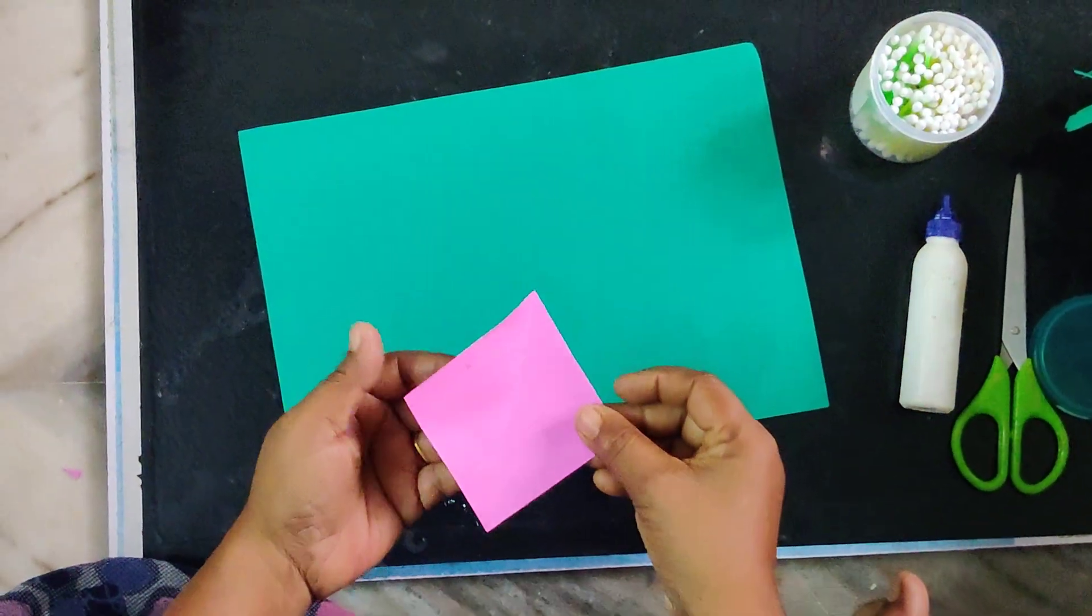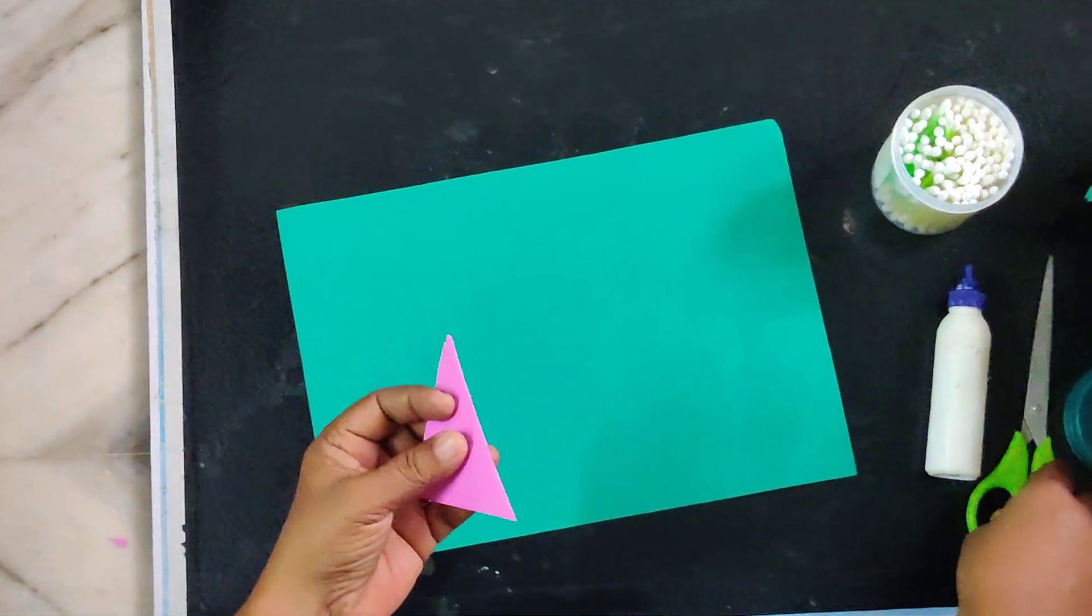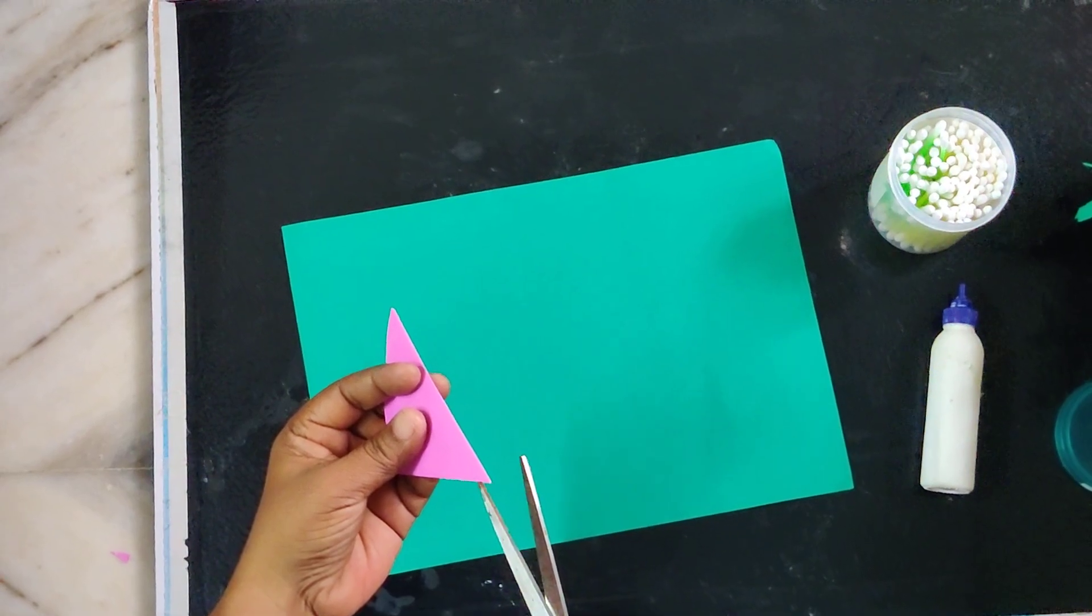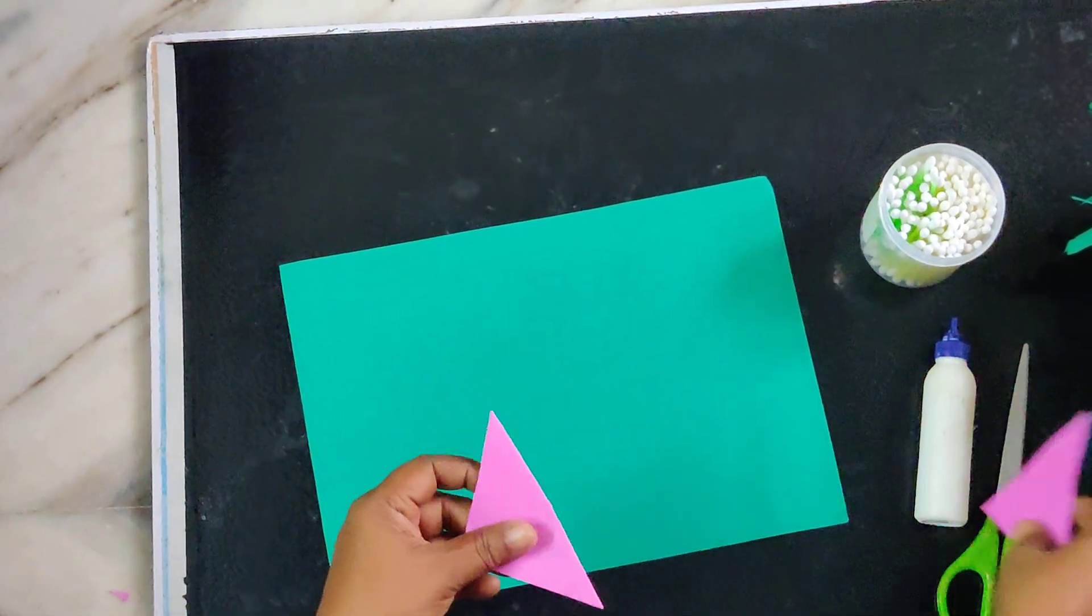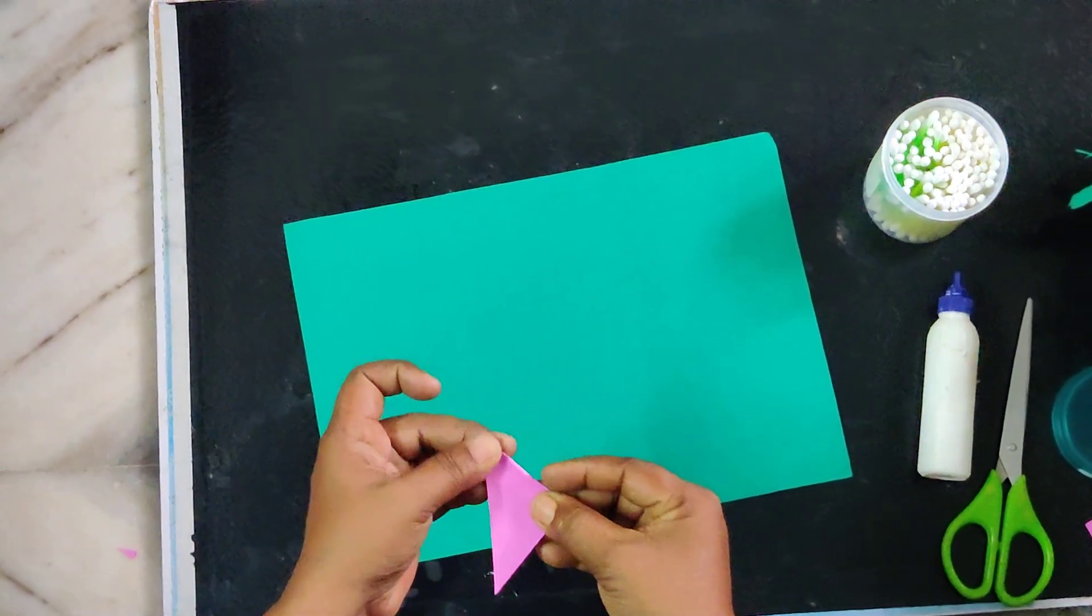First take December color square paper and fold it into diagonal shape. Cut it into half. Take one half of it and fold.